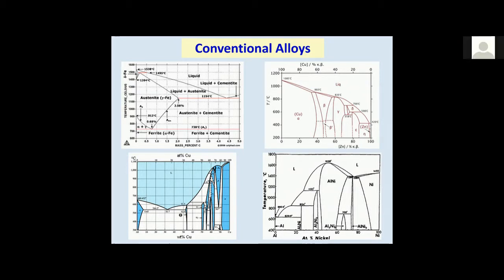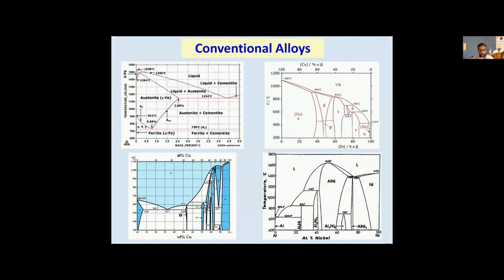High entropy alloys are what we call equiatomic alloys — they have equal amounts of the elements that you are adding. Most conventional alloys, for example brass, are binary alloys with two elements. Steel is iron-carbon, but we add other alloying elements. We know that stainless steel has chromium and nickel in it. Though there are multiple elements in stainless steel, one element is always major in proportion — something like 60-70% is one element. For example, duralumin has almost 95% aluminum with other alloying elements such as copper, zinc, magnesium, silicon in just 5-6%.